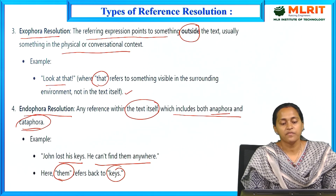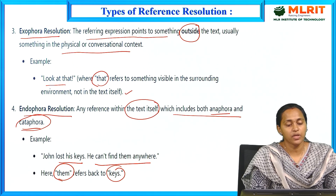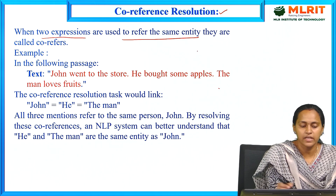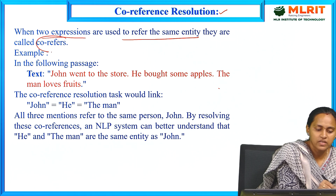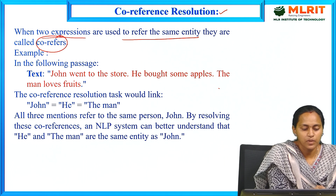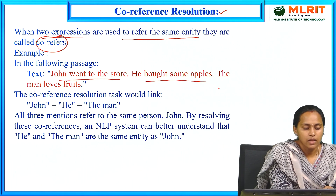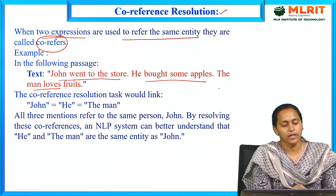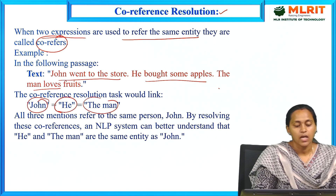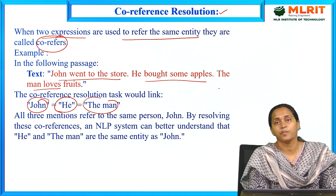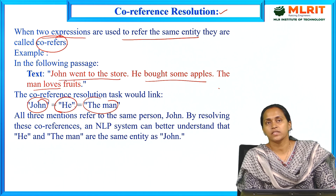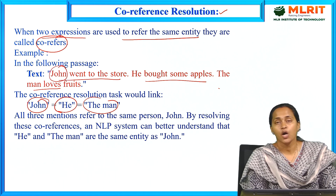This covers reference resolution and its types. Now coming to coreference resolution. When two expressions are used to refer to the same entity, they are called co-referents. For example: 'John went to the store. He bought some apples. The man loves fruits.' Here, John, he, and the man all refer to the same person — this is coreference.